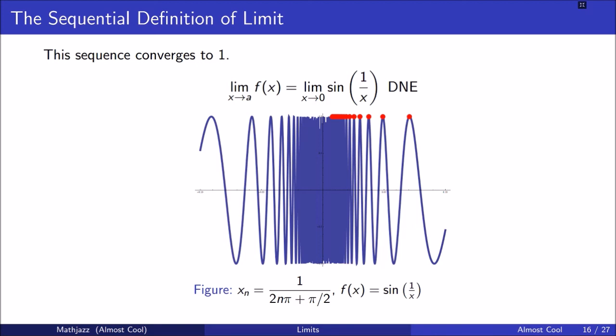The other sequence converged to zero. So now we know that this limit does not exist because there is no number l such that all sequences will converge to it. We found one sequence that converges to 1 and one sequence that converges to 0, and 0 and 1 are not the same number, so this limit doesn't exist.